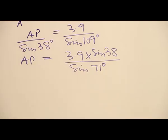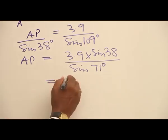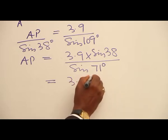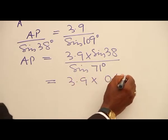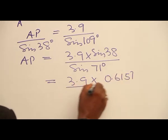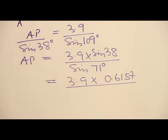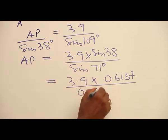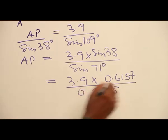So we will now find the values of sine 38. We have sine of 38 degrees, which gives you 0.6157. We also find the value of sine 71 degrees, which is 0.9455.